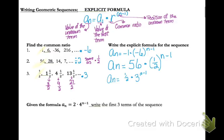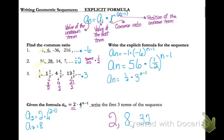Now I'm going to give you an explicit formula for a geometric sequence and ask you to write the first three terms. The first term in my sequence has to be 2, because that's a sub 1 in my formula. To find a sub 2, I replace n with 2 everywhere in my formula and solve — I get 8 as my second term. My rate of change is times 4, so I can use that to find the next term, which is 32.